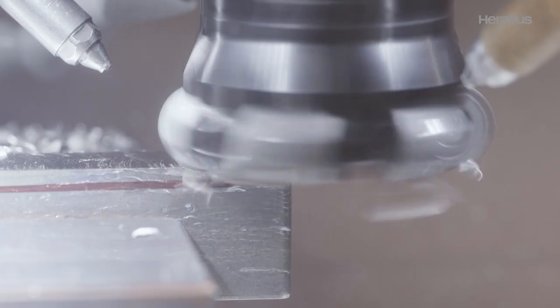Cooling the ingot creates a cast skin on the surface. This is milled off and the pure core remains.